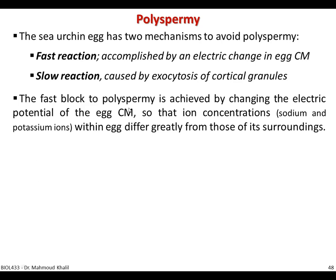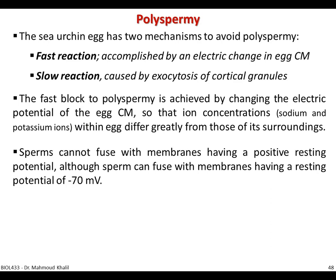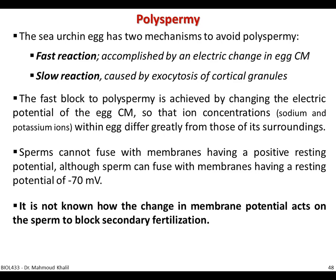The fast block to polyspermy is achieved by changing the electrical potential of the egg cell membrane. The ion concentrations — mainly sodium and potassium — within the egg differ greatly from those of its surroundings, giving a potential difference between outside and inside the membrane. Sperm cannot fuse with a membrane having a positive resting potential, but can fuse with a membrane having a resting potential of around minus 70 millivolts. Any change in this electrical potential difference blocks sperm contact, and it is not known exactly how the change in membrane potential acts on the sperm to block secondary fertilization.